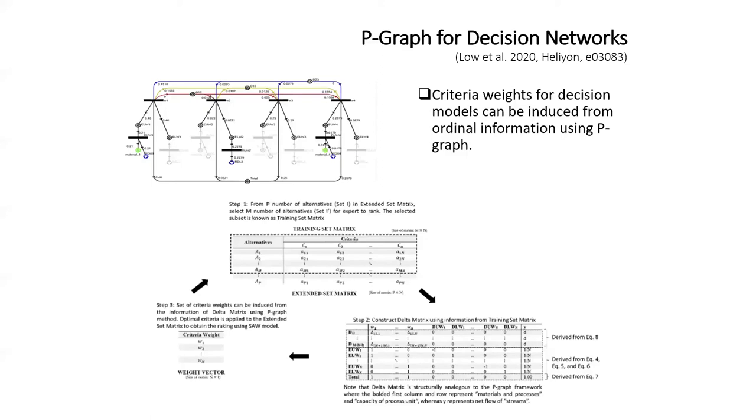Another recent work which applies P-graph to a novel network is the use of P-graph for decision networks. In this work, which you may consider bordering on machine learning, we showed that P-graph can estimate or approximate the thought process of a human. The input into the model is how a human expert ranks a small set of alternatives. That is just ordinal information for four or five alternatives. The human expert need not specify his or her thought processes in ranking these alternatives. We showed that we can use P-graph to approximate those thought processes via a decision model, which can then be used to generalize the expertise of the human who just provided quick inputs by way of ordinal information.